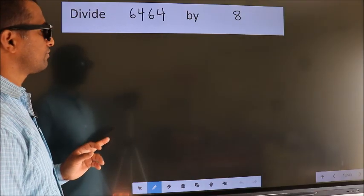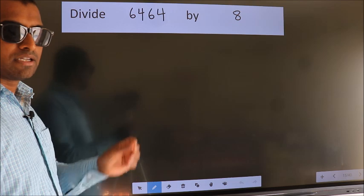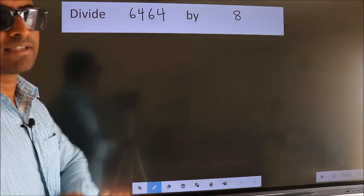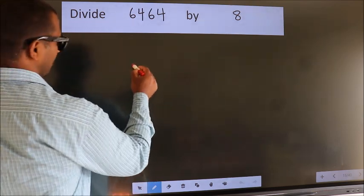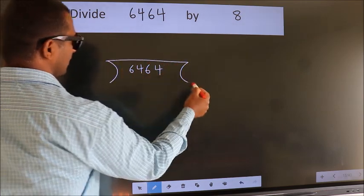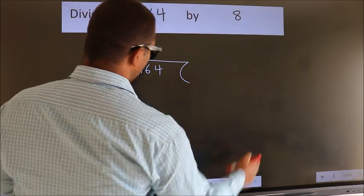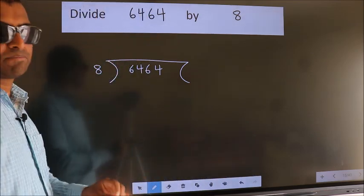Divide 6464 by 8. To do this division, we should frame it in this way: 6464 here, 8 here. This is your step 1.